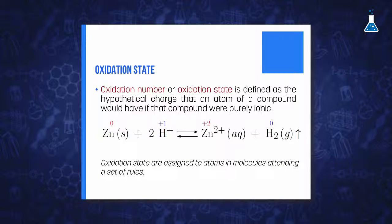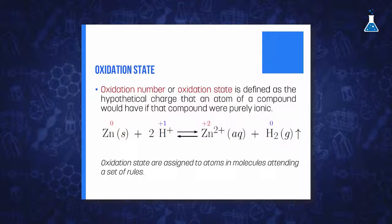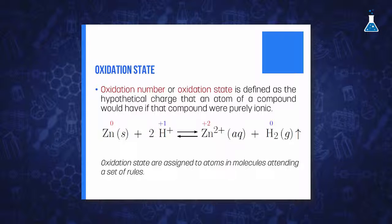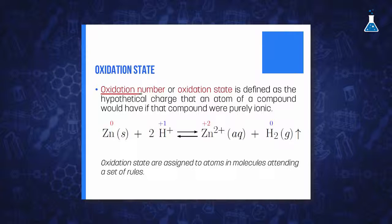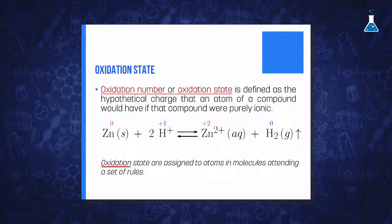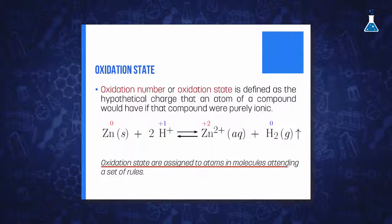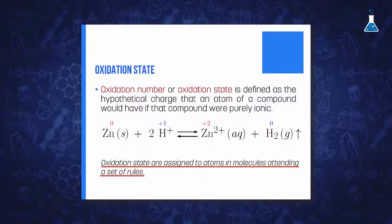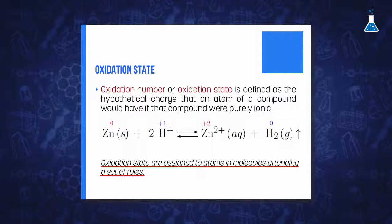So, a method is used to keep track of electrons in a redox reaction. We employ the term oxidation number, also known as oxidation state, which are integral numbers assigned to atoms in molecules according to a set of rules.